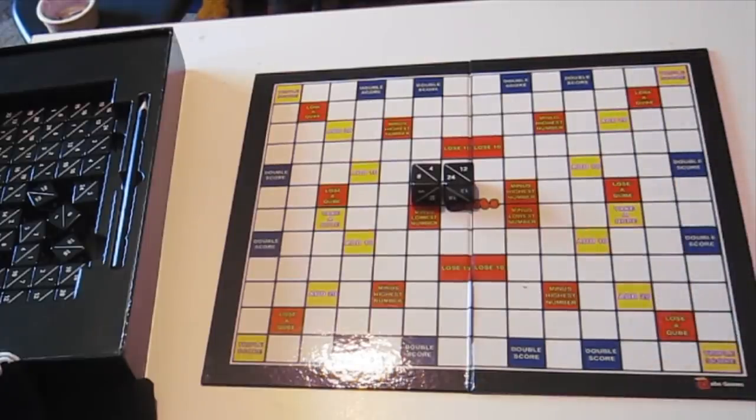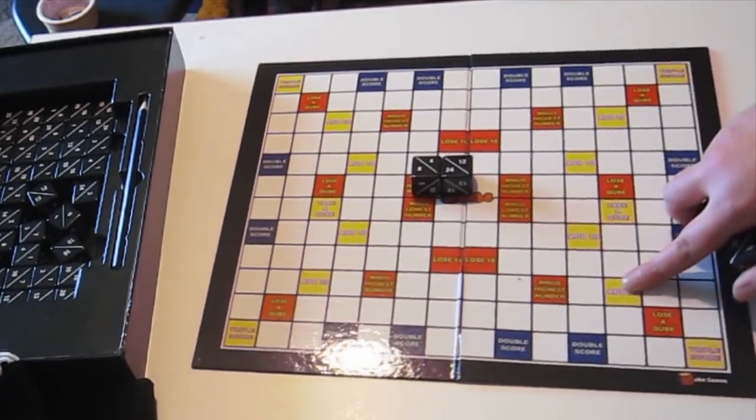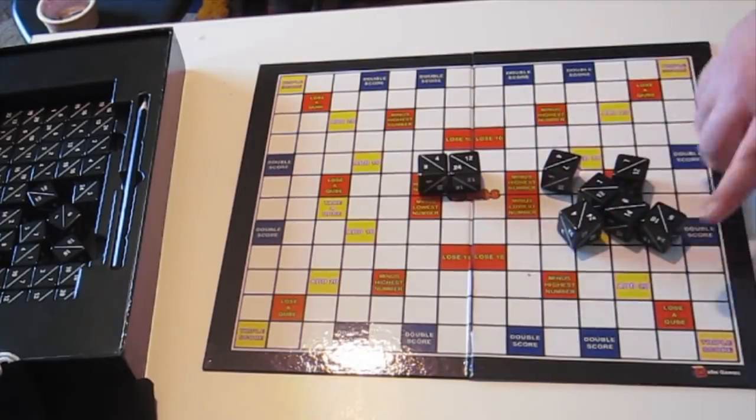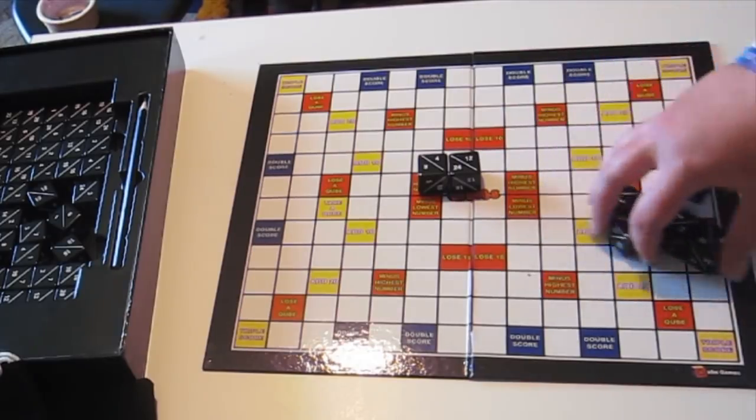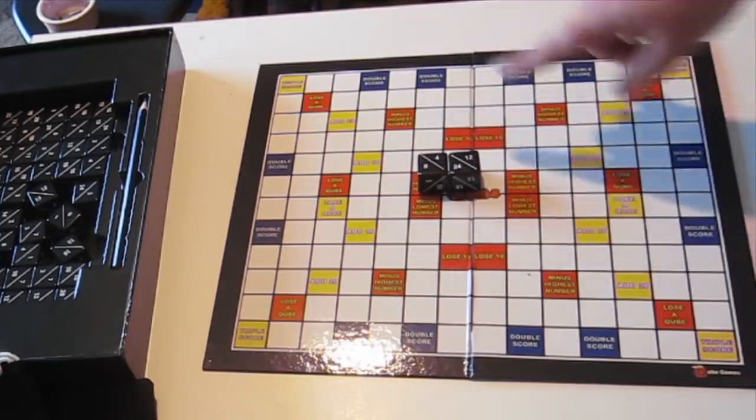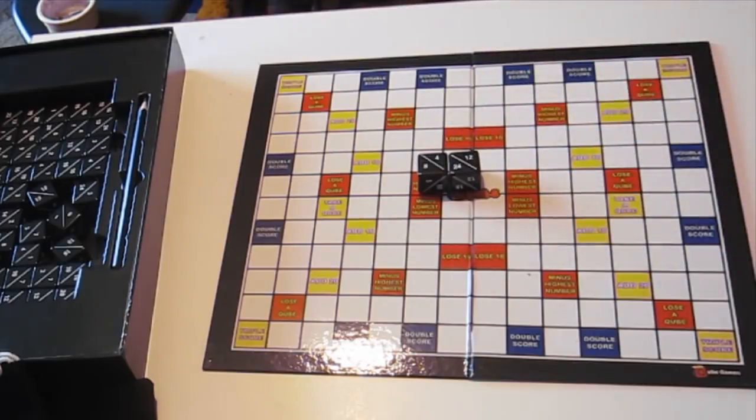And basically to start with, to know how many rounds you're going to go through, you must have at least one round for each cube that each player has. So you all start with the same number of cubes. The game says a minimum of six.